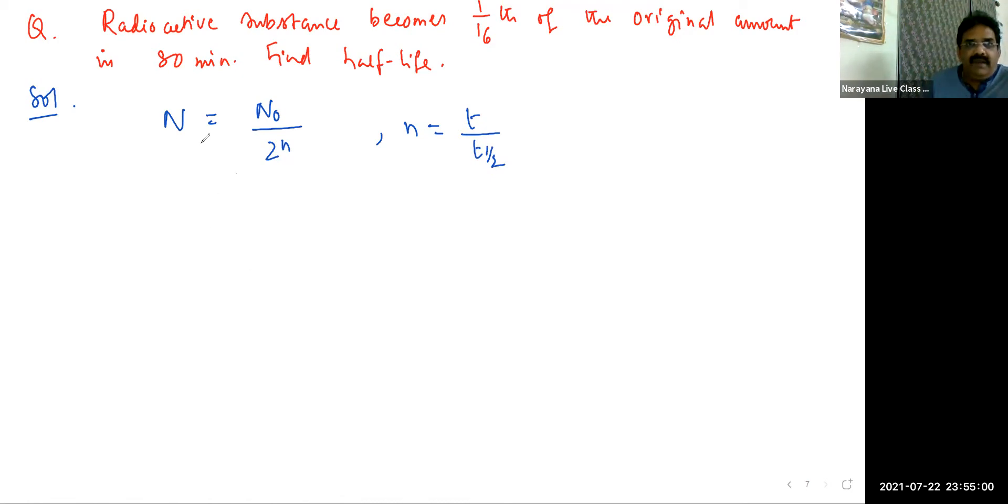Here we're given fractions, so N₀ = 1 and N = 1/16. Therefore, 1/16 = 1/2^n. This implies 1/2^4 = 1/2^n, which means n = 4.